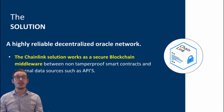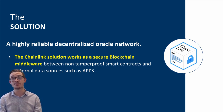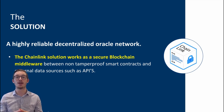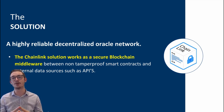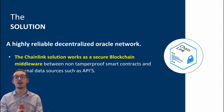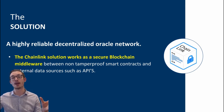The solution is a highly reliable decentralized oracle. The Chainlink solution works as a secure blockchain middleware between tamper-proof smart contracts and external data sources such as APIs. Smart contracts are immutable, but external data feeds don't naturally speak to immutable smart contracts. They need a middleman — a middleware — to bring two parties together for a seamless operation, from an outside data feed triggering a smart contract payout or settlement.